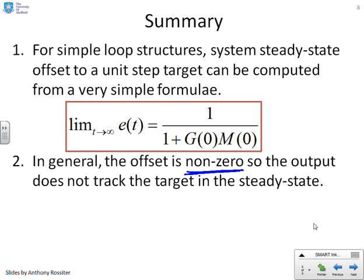In other words, if G of 0 or M of 0 are bounded, then the offset is not 0. So the output does not track the target in the steady state. And in future videos, we want to look at answering the question, well, how can we get a zero offset, which is clearly something that is desirable.